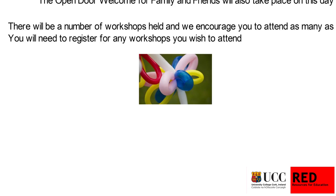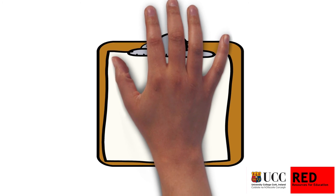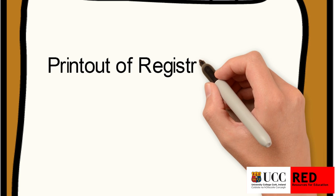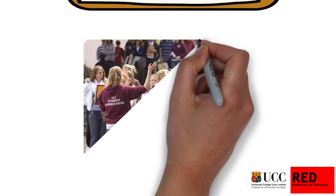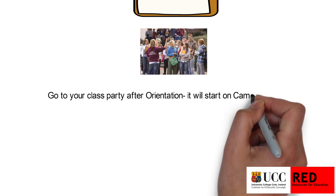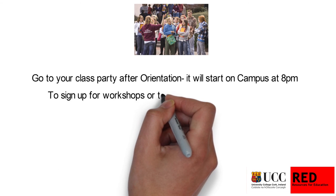It is important that you attend your orientation and complete registration part 2 — you will be told when this is. For registration part 2 you need: your registration part 1 printout, passport or original birth cert, and your PPS number. Go to your class party after orientation — it will start on campus at 8pm. To sign up for workshops or to find out more information, check out this link.